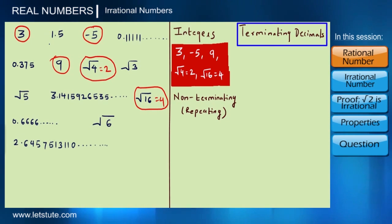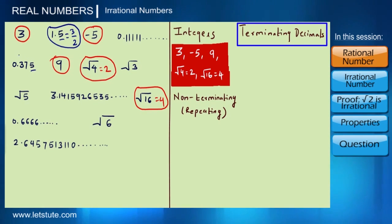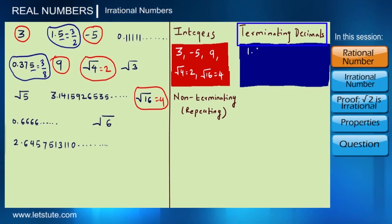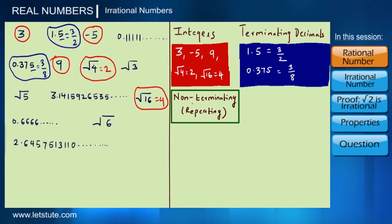Now if I talk about terminating decimals, we can see that 1.5 is terminating and it terminates at digit 5. Similarly, the decimal number 0.375 terminates at 5. So 1.5 and 0.375 are called terminating decimals.